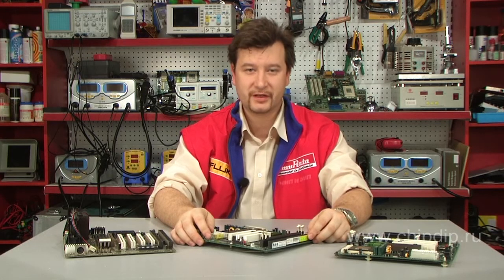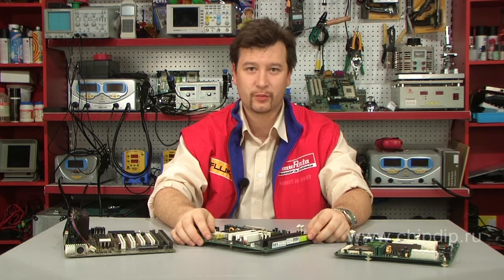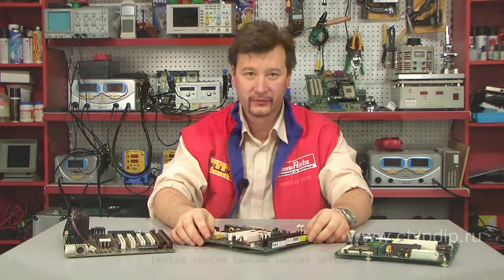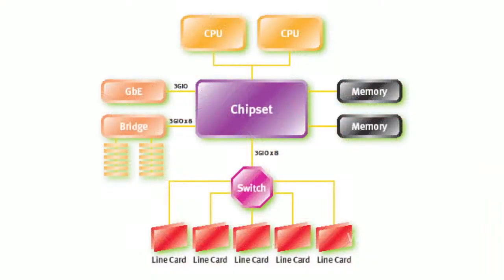PCI Express Serial Bus, developed by Intel and its partners, is intended to replace PCI Parallel Bus and its extended and special version AGP. Despite similar names, PCI and PCI Express buses have little in common. Parallel data transfer protocol used in PCI limits the bandwidth and bus separation frequency, while serial data transfer used in PCI Express ensures better scalability.